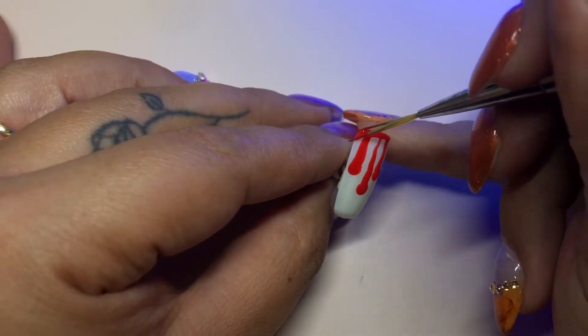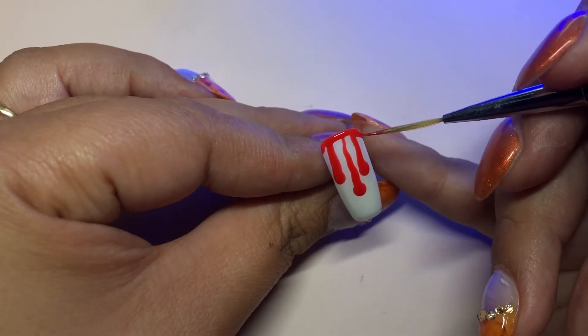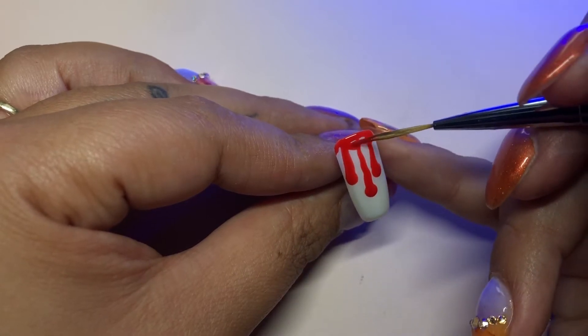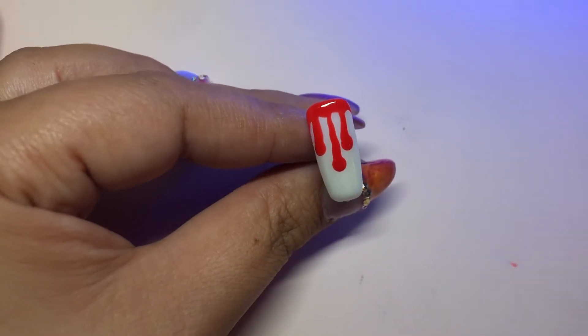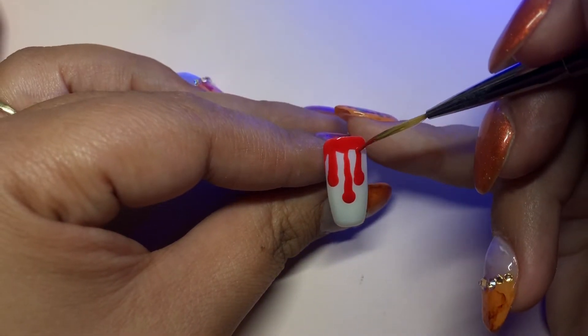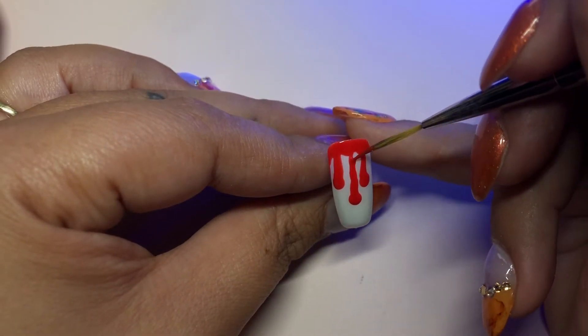Then once you do that, I'm going to go over the top and connect all the drips. I'm just going to refine everything, come back and make them a little thicker, pull them up a little bit more so they blend better into the top.